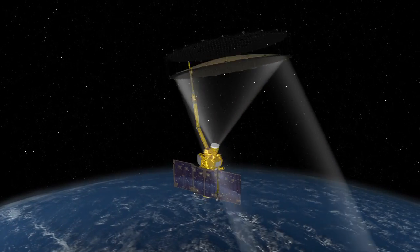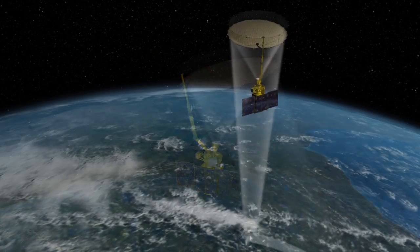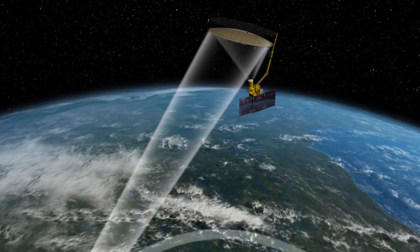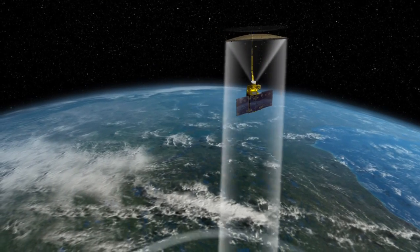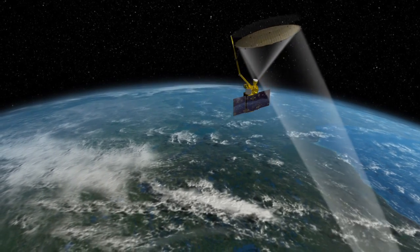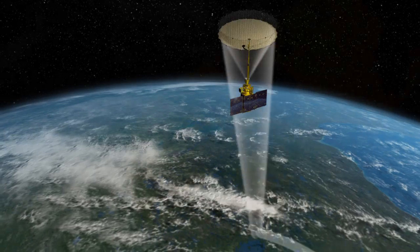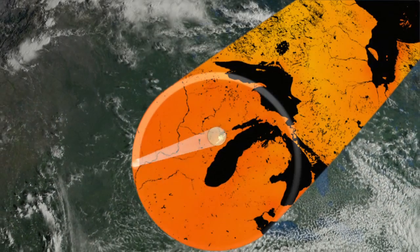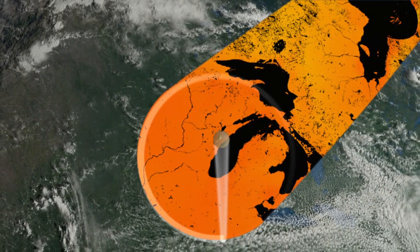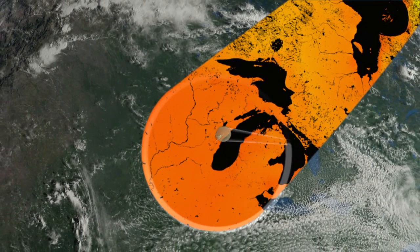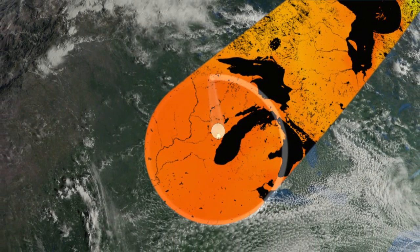Observations made by Aquarius will be used to fine-tune soil moisture measurements made by NASA's SMAP satellite, which is scheduled to launch later this year.